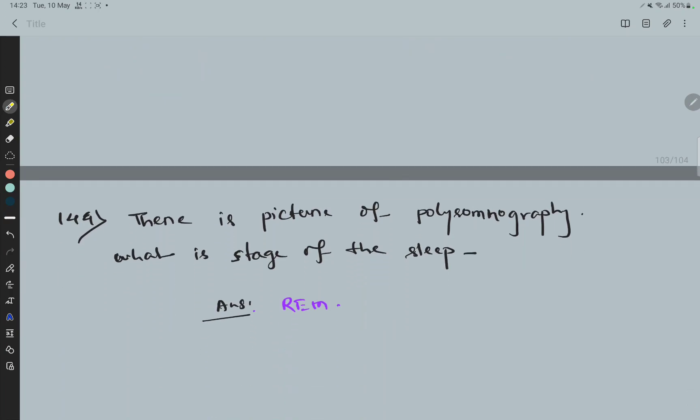Question 144: There is a picture of a polysomnograph and what is the stage of sleep. The right answer is REM sleep.